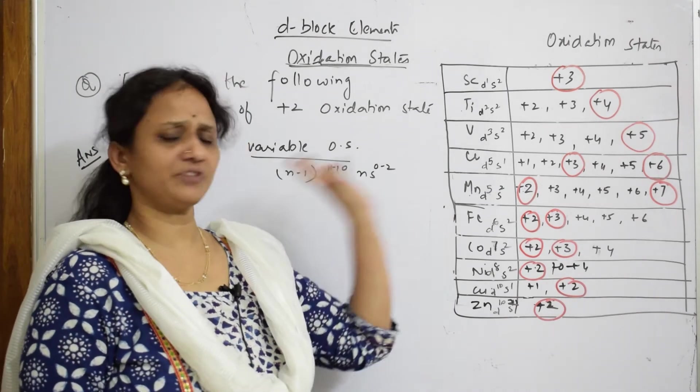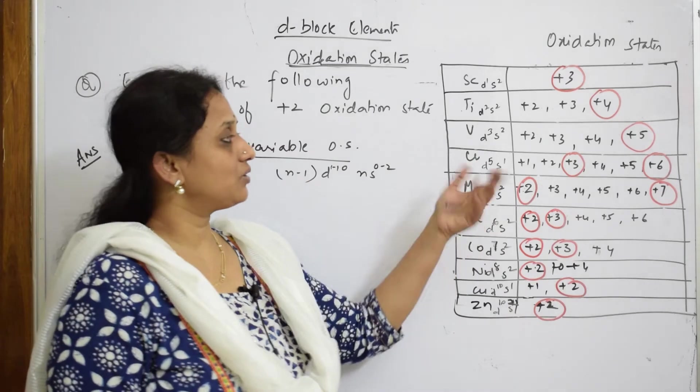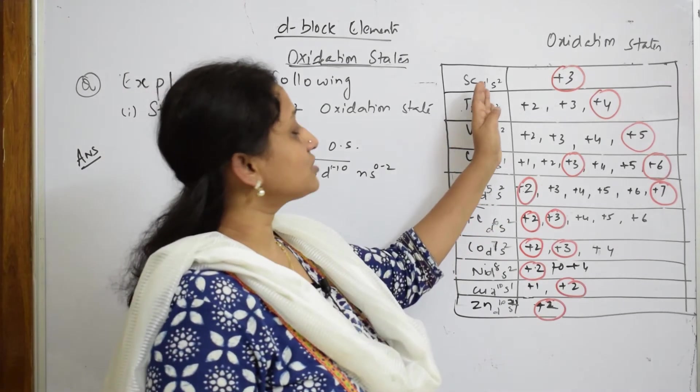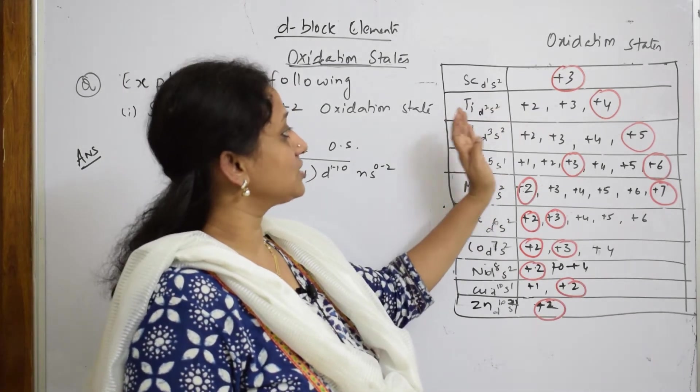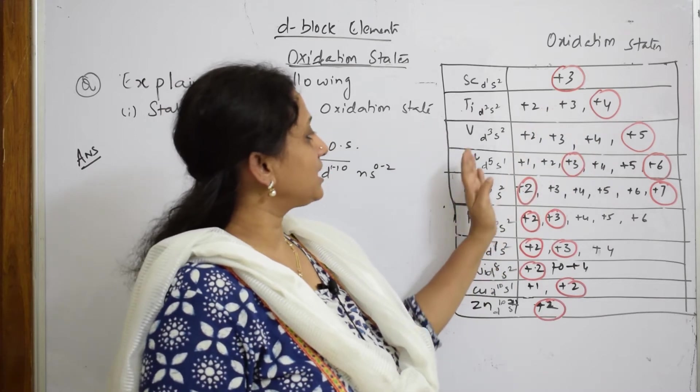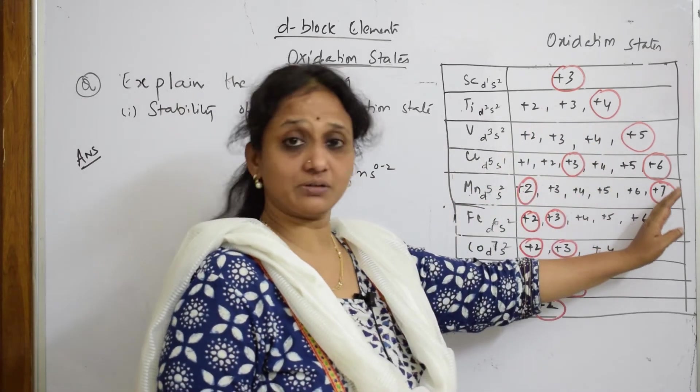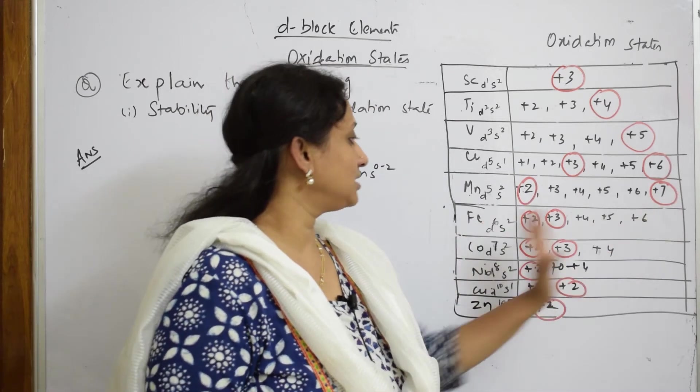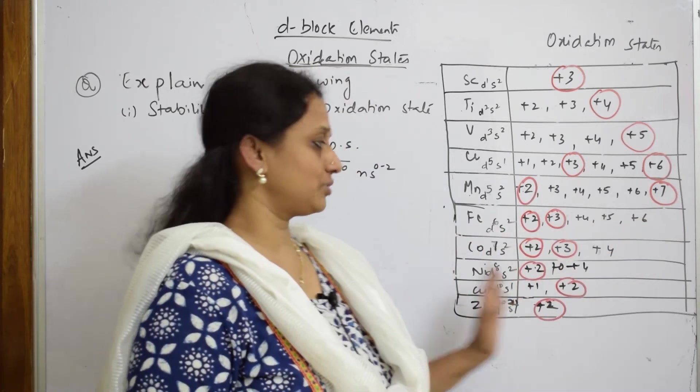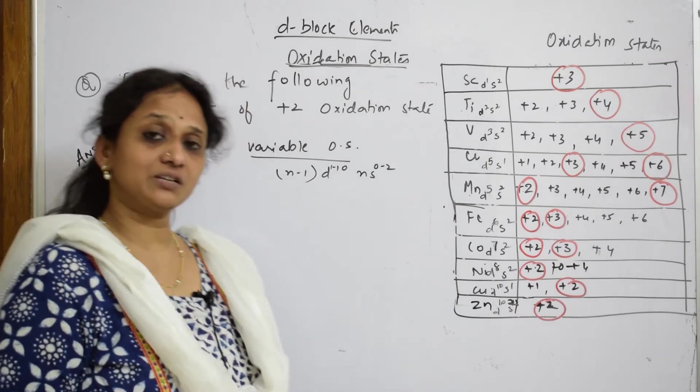See how are the variable oxidation states. If I have to start from scandium +3, going 2, 3, 4, when I come to vanadium till 5, chromium till 6, manganese till 7 maximum. Then iron, cobalt 4.